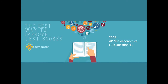Hey guys, it's Will from LearnRator, and in this video I'm going to walk you through the 2009 AP Microeconomics FRQ question number one. This question, unsurprisingly, is related to monopolists — many of these first questions are. So let's go ahead and work through it.